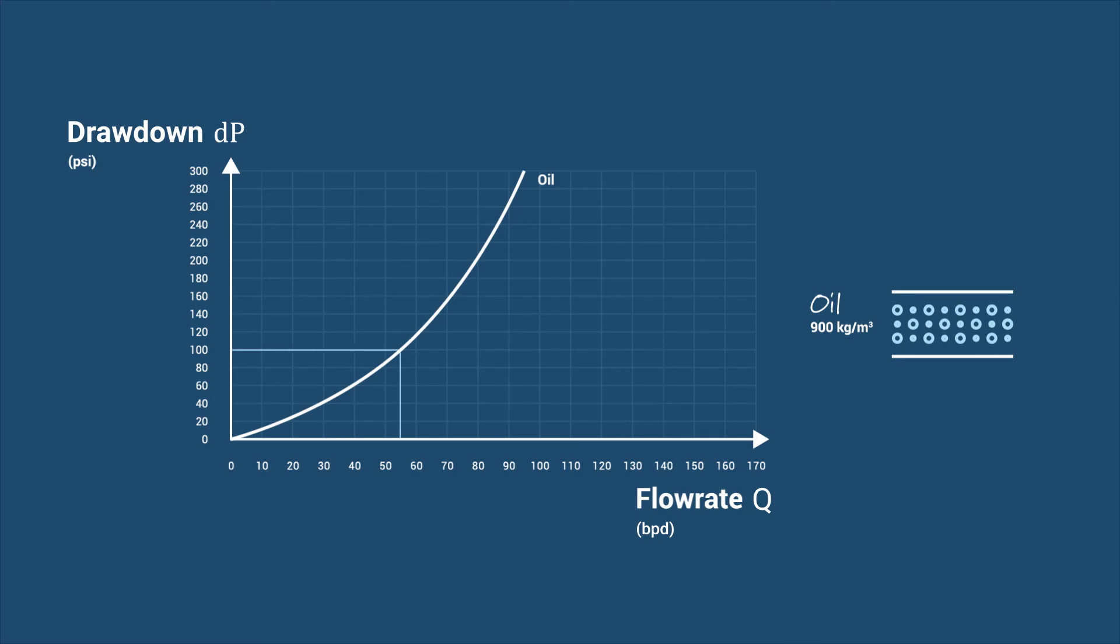When water starts breaking through at 1000 kilograms per meter cubed, because the density is higher, the ICD will choke the water slightly more. This results in a water performance curve like this.